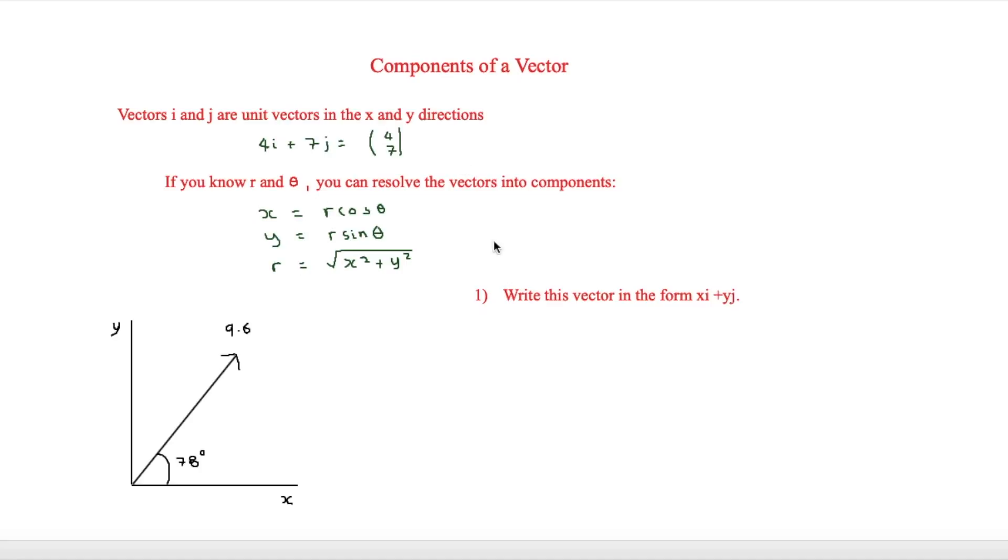you can resolve the vectors into components. And this means that x is equal to r cos theta, y is equal to r sine theta. And if you don't have what r is, you could do that by the root of x squared plus y squared. And this is essentially using Pythagoras.